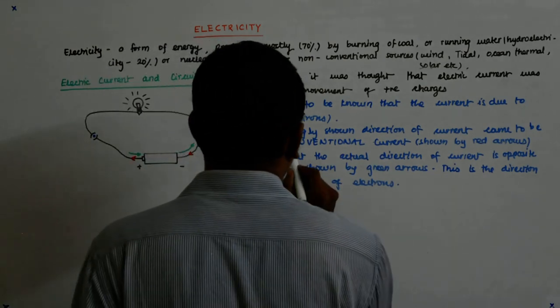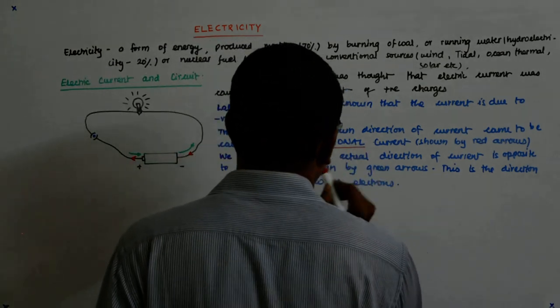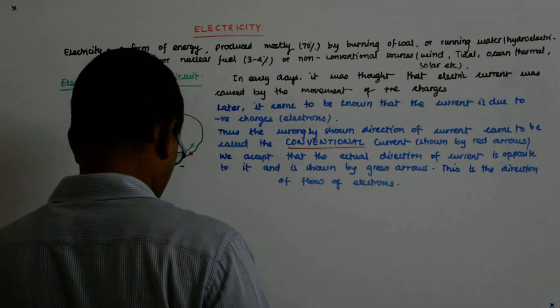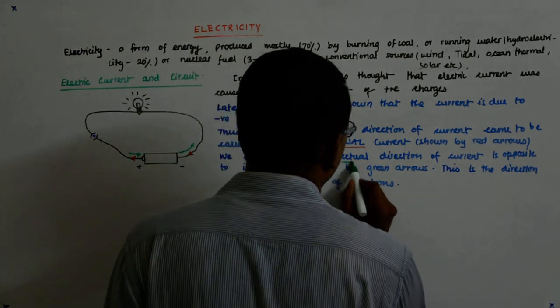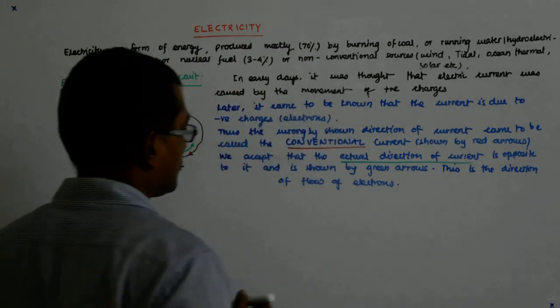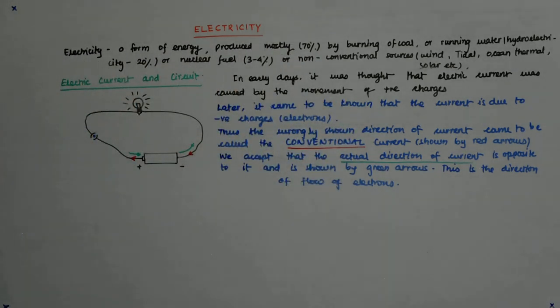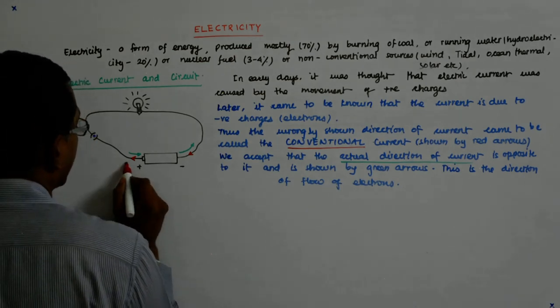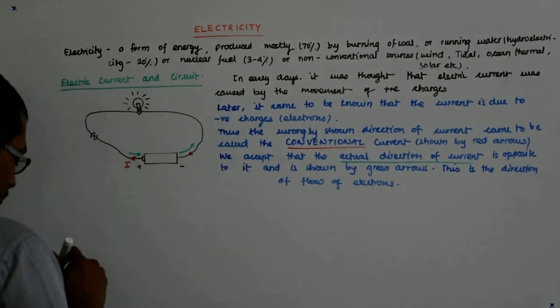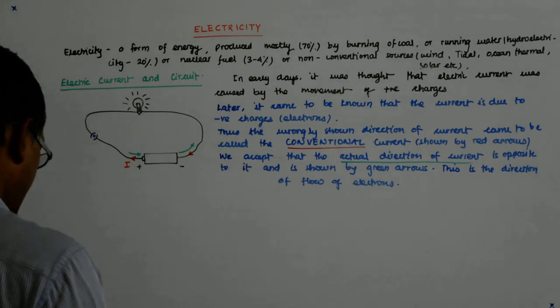So that is called the conventional current, and the green one is called the actual direction of current. And that is the direction in which the electron flows. So we show the current I to be like this, still we show it. For all the circuits that I'll show, it'll be that.